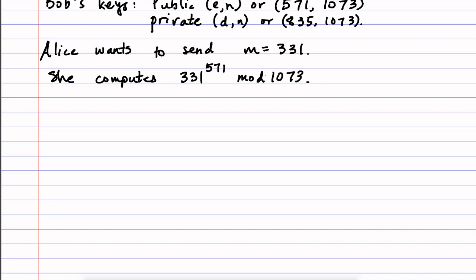And to do this, because it's such a large number, what she does is she first figures out the binary expansion of 571 in order to be able to use repeated squaring in order to calculate this power. So 571 is 512 plus 32 plus 16 plus 8 plus 2 plus 1.